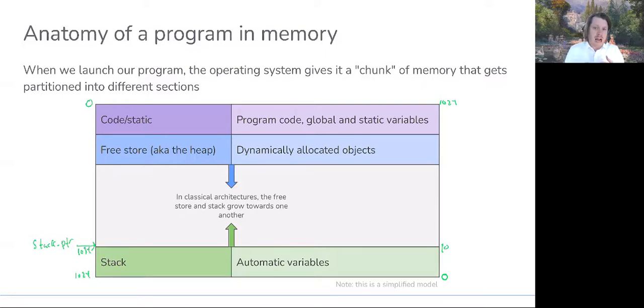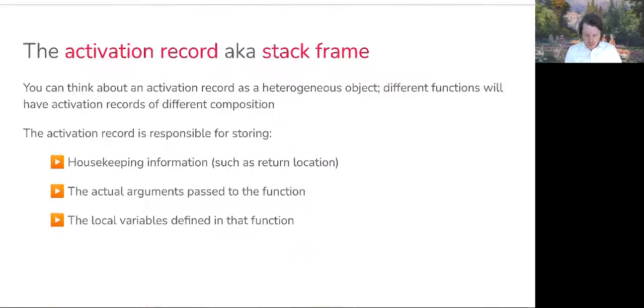With each time a record is pushed, if the stack's growing up, we'd expect the address to that activation record to increase. If the stack's growing down, the address to that would decrease. So that's what I'm getting at there.